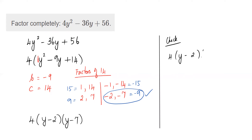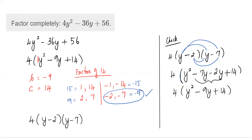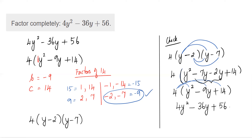To check: FOIL (y - 2)(y - 7) — that gives y² - 7y - 2y + 14, and please watch your signs. Collect like terms to get y² - 9y + 14. Now distribute the 4: 4y² - 36y + 56. That matches the original question, so box the answer. That covers factoring by pulling out the GCF.